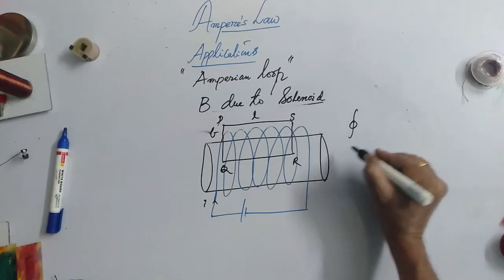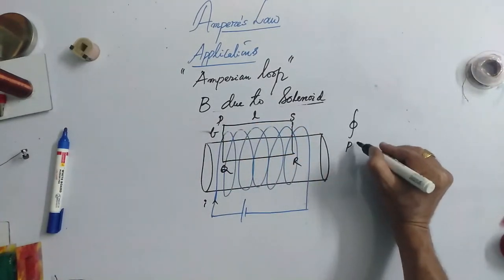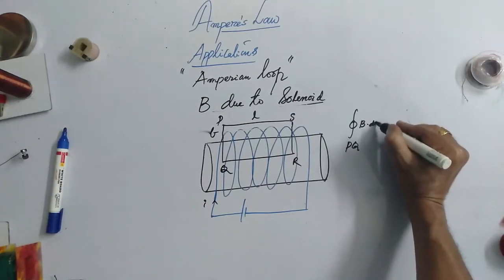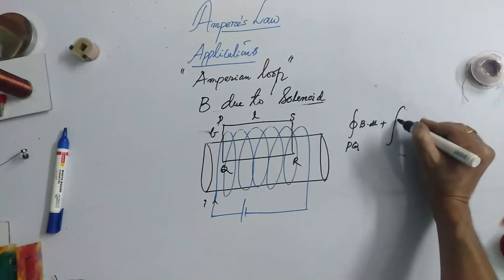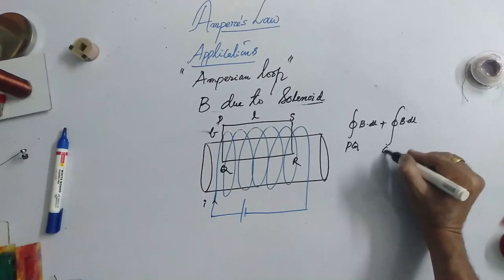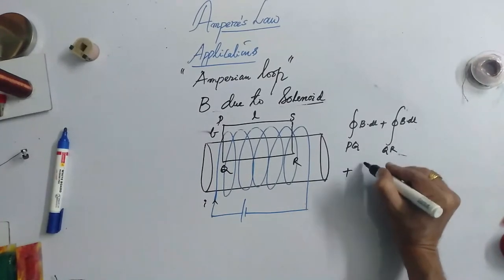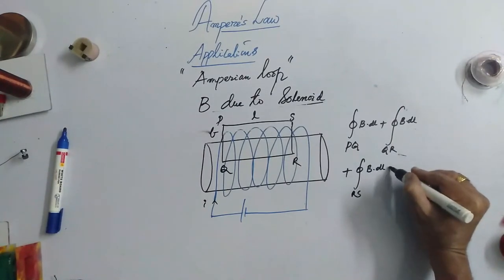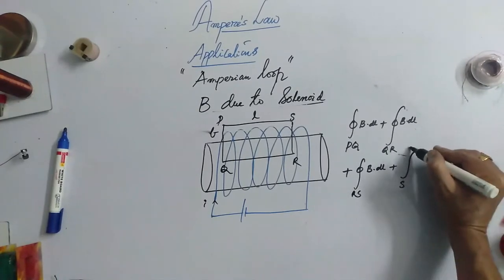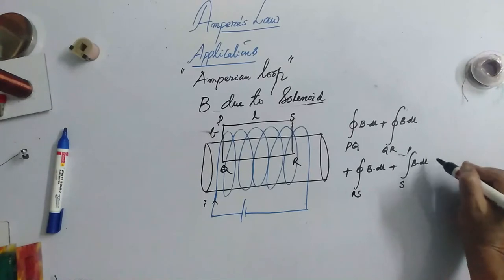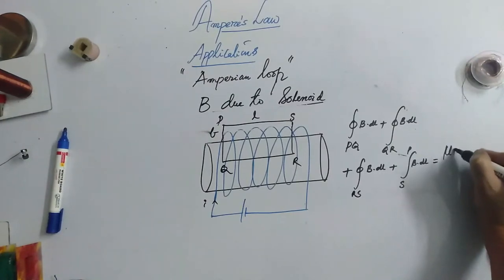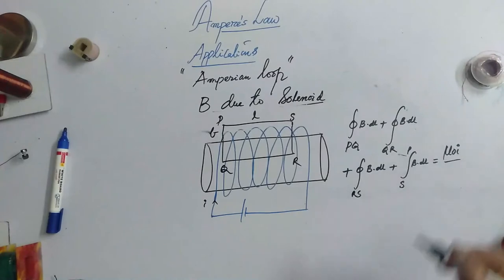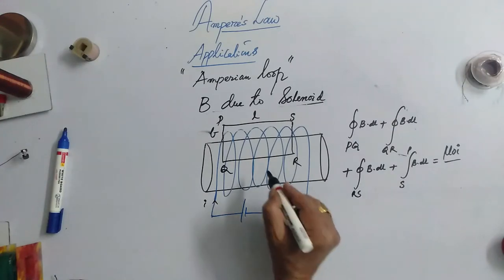I have to take along PQ plus along QR plus along RS plus along SP. This entire sum must be equal to mu naught times of current threaded in the loop.